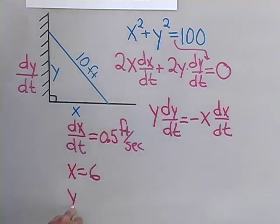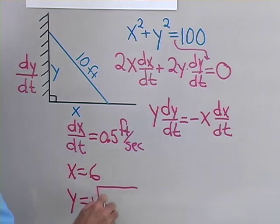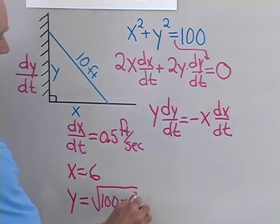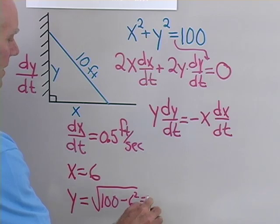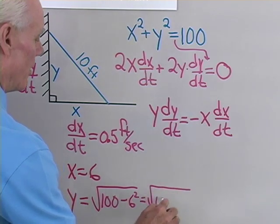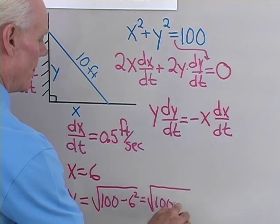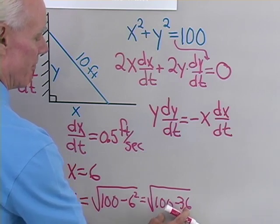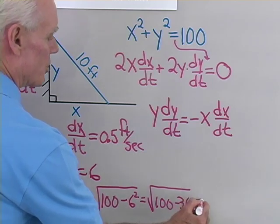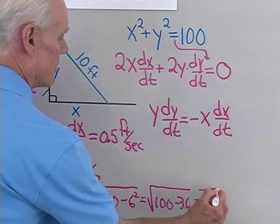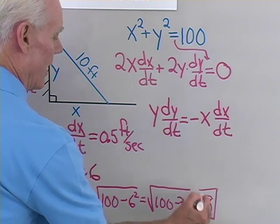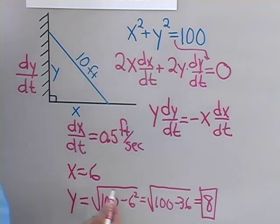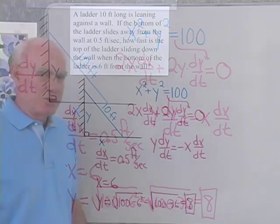I can use the Pythagorean theorem again. y is going to be equal to the square root of 100 minus 6 squared — the square root of 100 minus 36 — which is the square root of 64, which gives me 8. So when x is equal to 6 feet, y is equal to 8 feet.